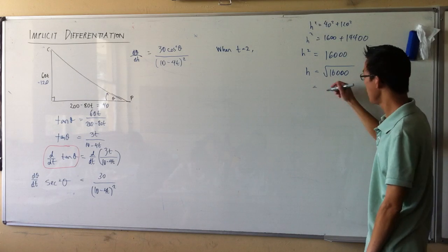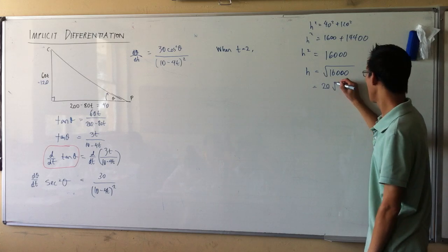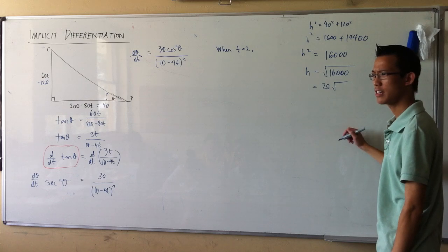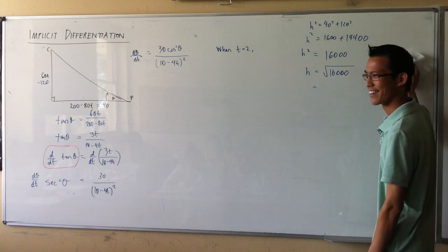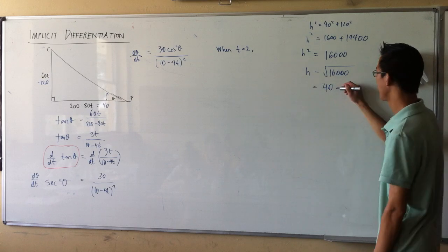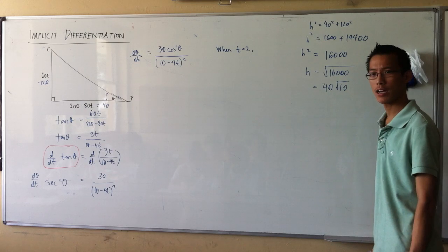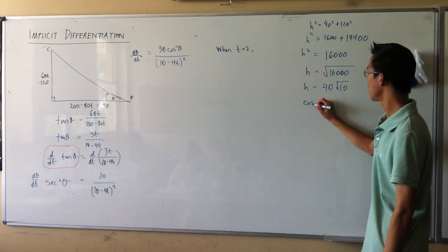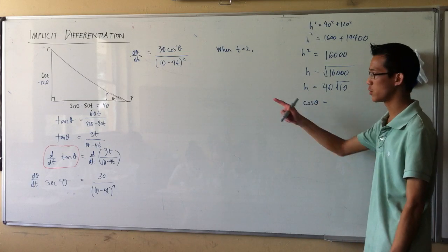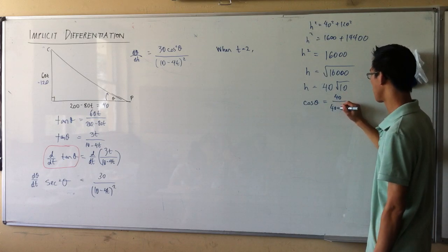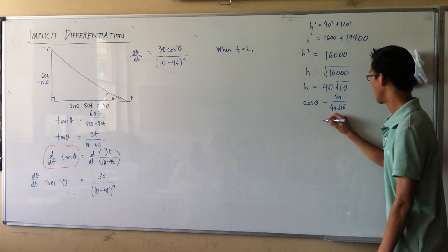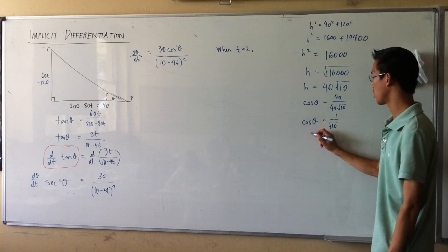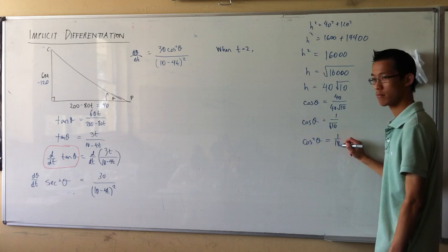So if I take 400 out of here, it'll become a 20 out the front, right? And this will be, if I divide by 400, let's divide by 1,600 so I end up with a 40. That's better. Okay, so if that's the hypotenuse, therefore cos θ will be adjacent on hypotenuse, which is 40 on 40 root 10. So 1 on root 10. Okay, so therefore cos² θ will be 1 on 10. Is that okay?